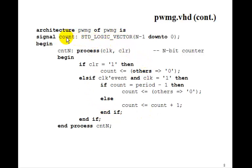So the n-bit counter, count is now n minus 1 down to 0. The asynchronous clear, all zeros. Else is the rising edge of the clock. If the count is equal to period minus 1, reset the count to all zeros. Otherwise, just increment the count.